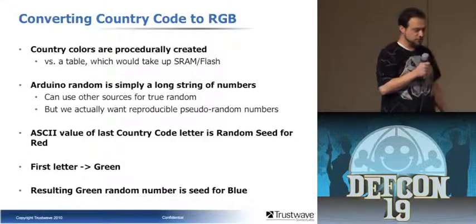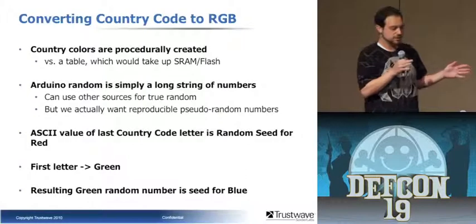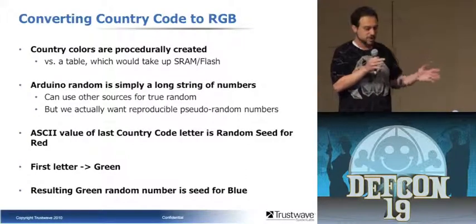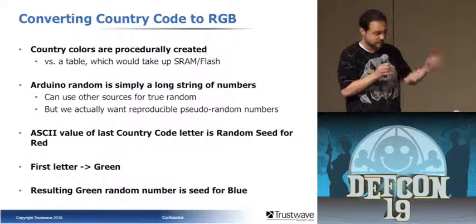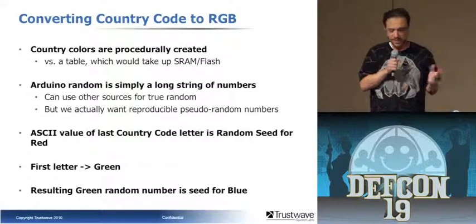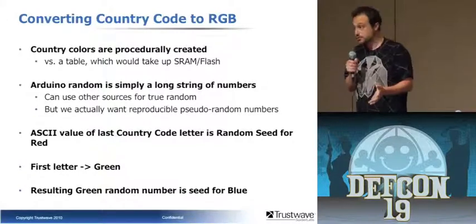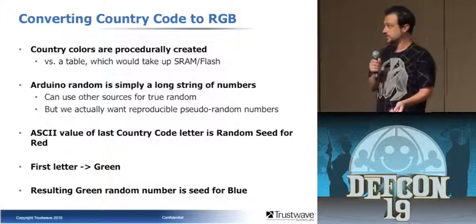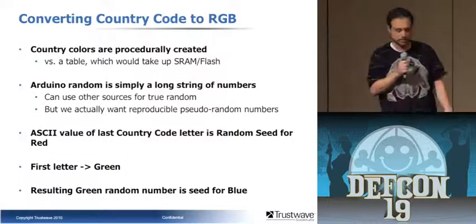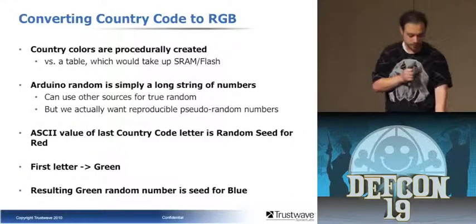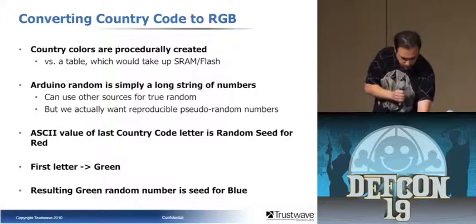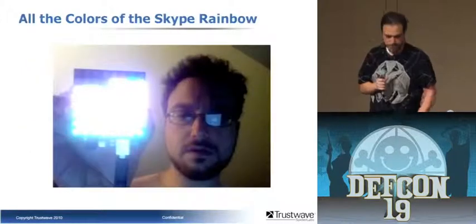There are two views I'm going to show you. The first view will fill up the LED matrix with all the different sessions the machine is doing, color-coded by country using GeoIP. Once you learn the color for a country it's always going to be the same — green, blue, and so on. The first letter of the country code turns to green, and the result generates the color. So now's the part of the talk where I try to show you how this works.